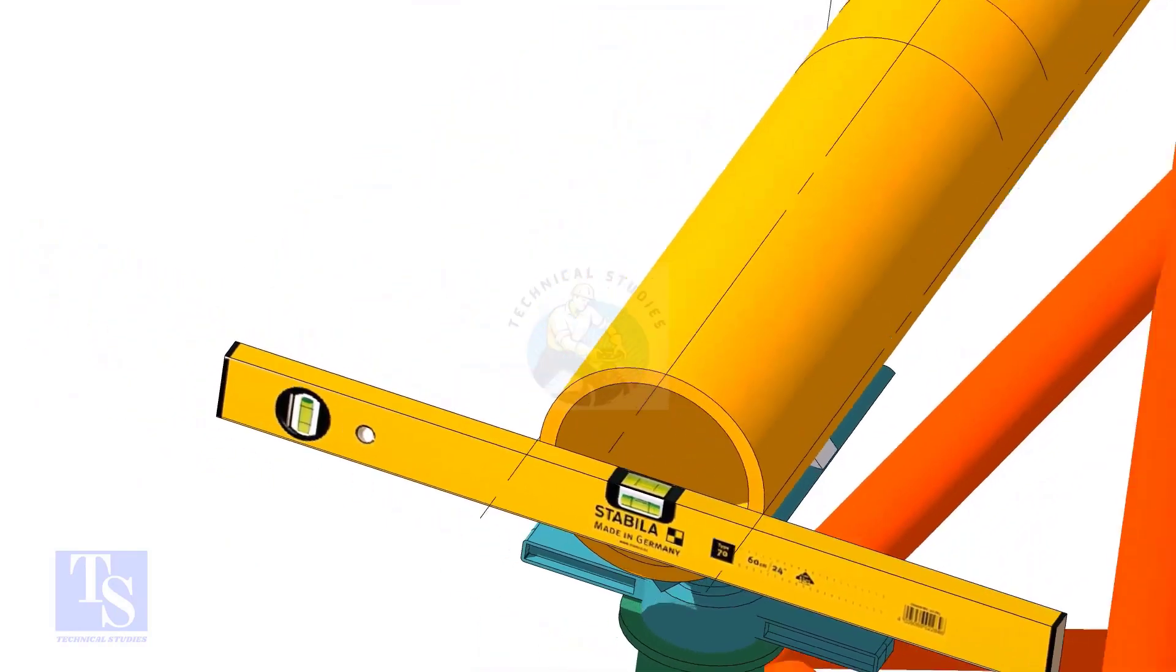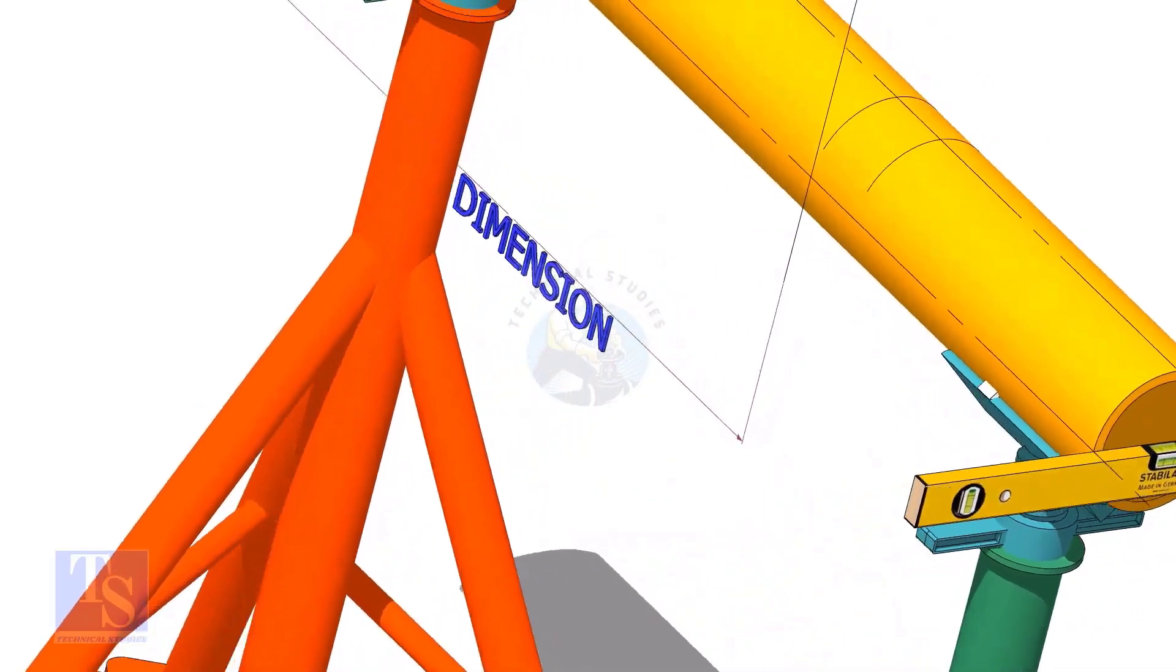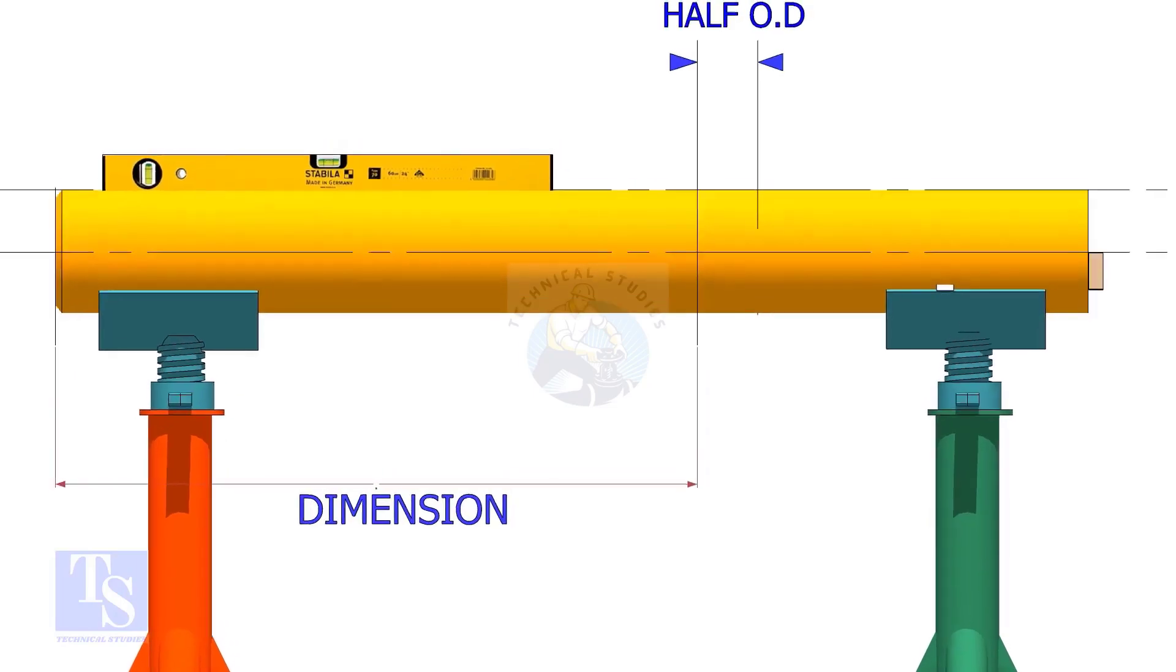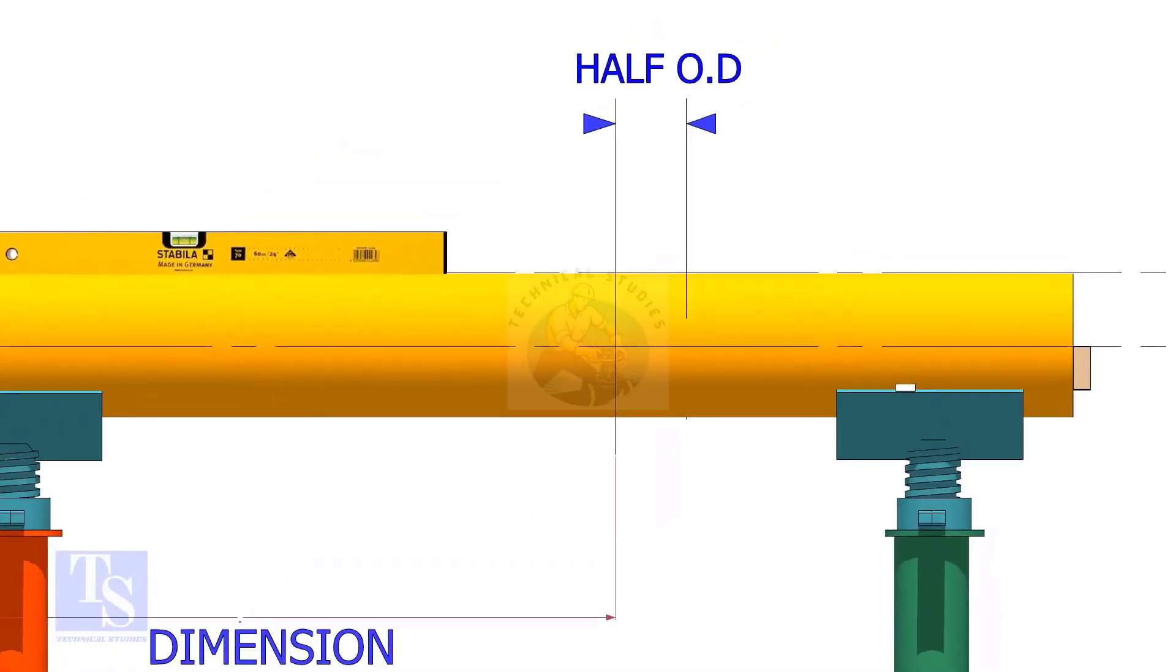Mark the center of the laterolette as per the drawing. Mark half OD of the header in the direction of the laterolette on the top of the pipe. This line is actually for inspection purposes only.